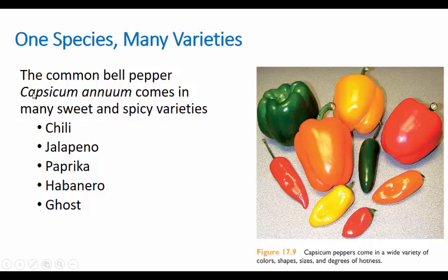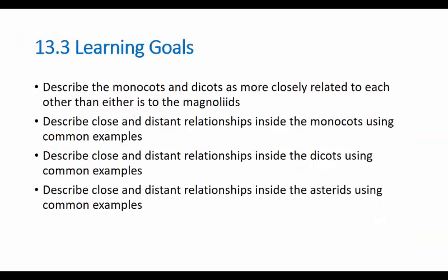One more benefit of capsaicin: it is used to control heart conditions. Heart problems are often treated with concentrated capsaicin in pill form — it's one of our natural medicines that helps with heart disease.